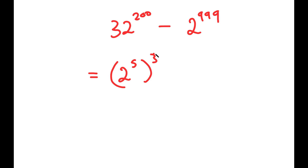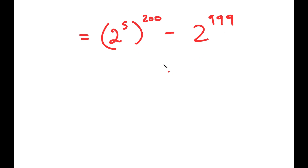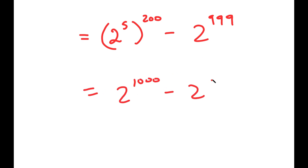So I get 2 to the power of 5 to the power of 200, minus 2 to the power of 999. And this turns into 2 to the power of 1000 minus 2 to the power of 999, because the 5 and 200 multiply.